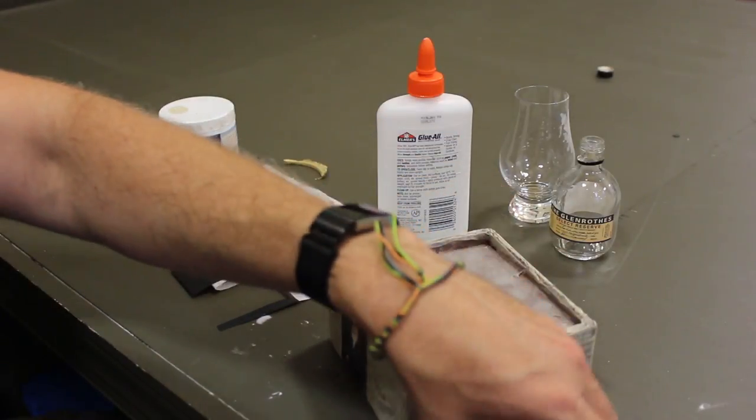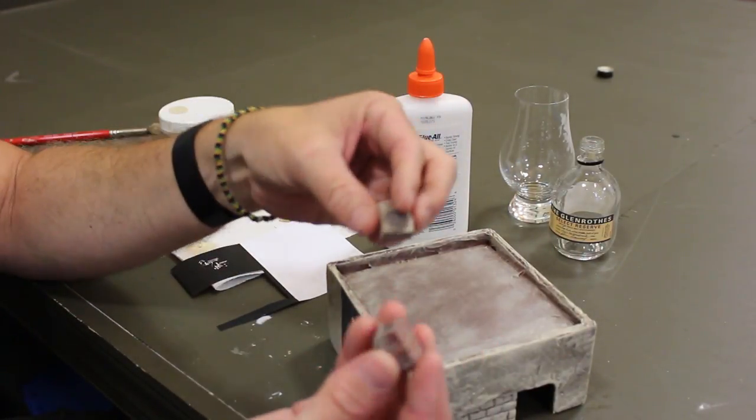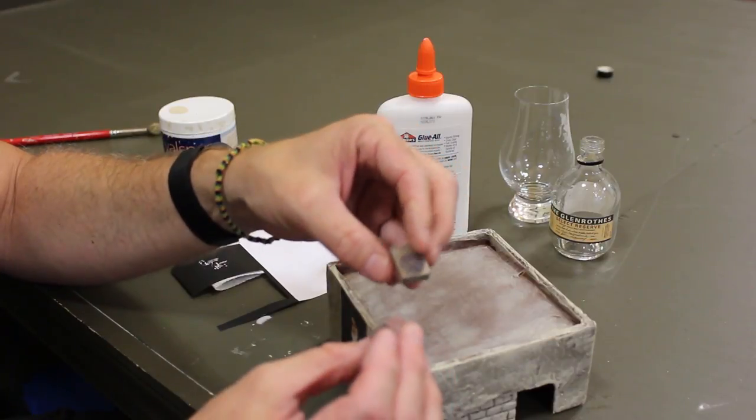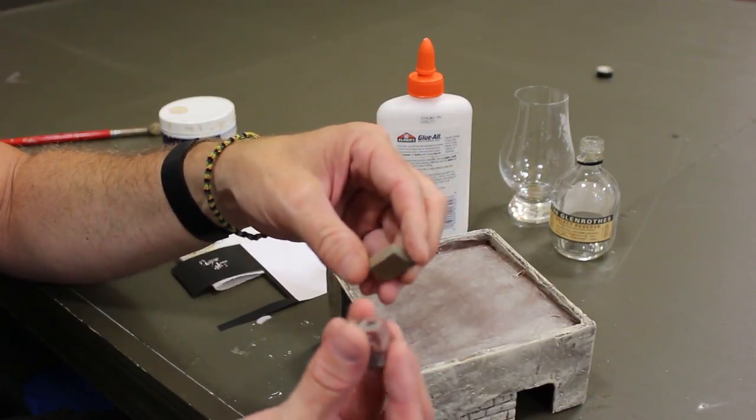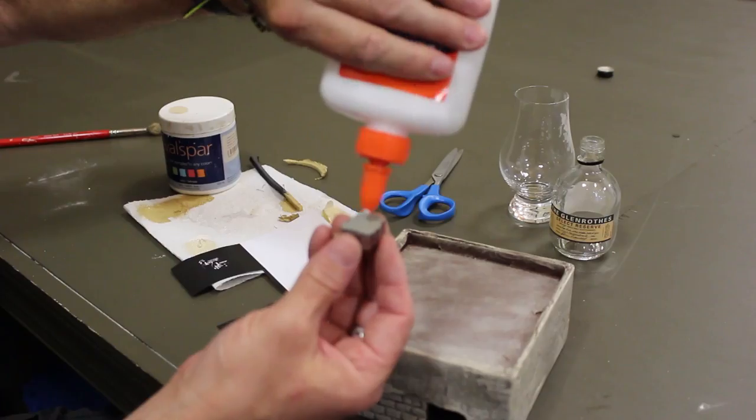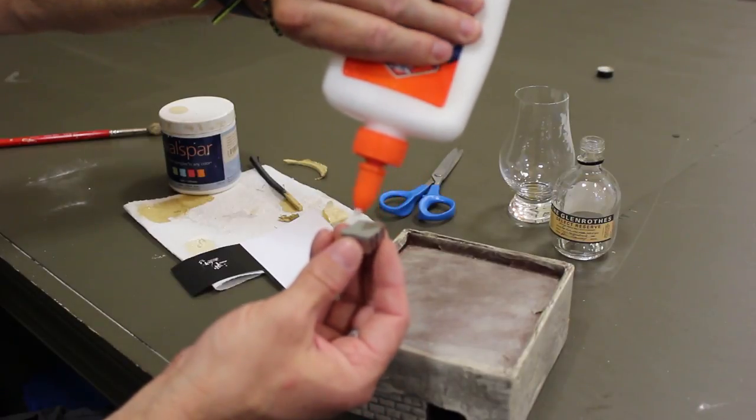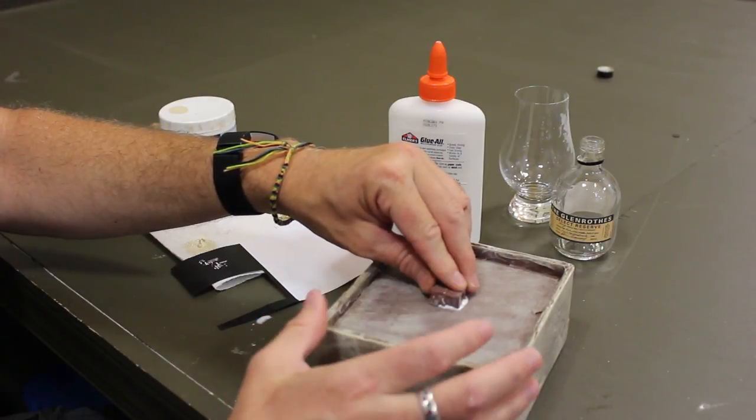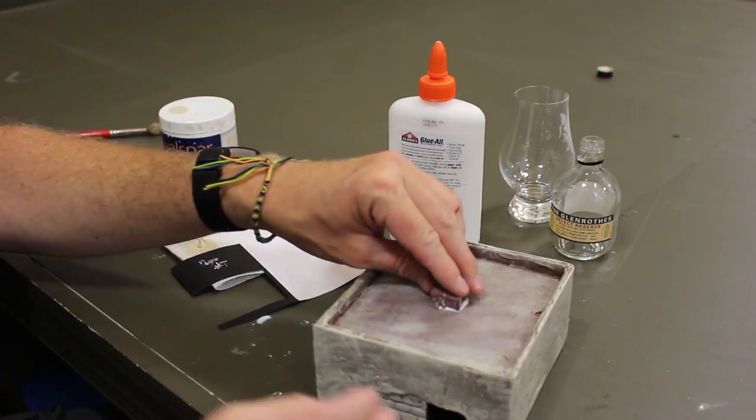The next accessory I like to add to my modern Middle Eastern buildings are some type of air conditioning units. I bought these online. These are cast resin units that I think are 28 millimeter scale, but they work for 20 millimeter buildings as well.